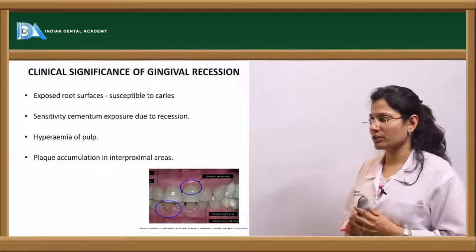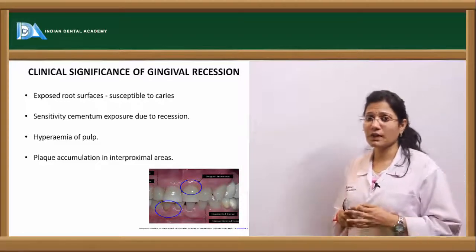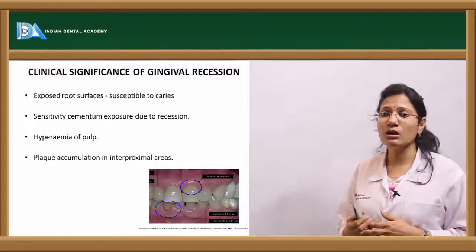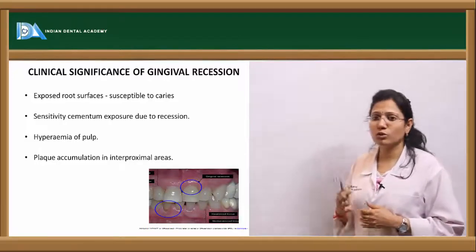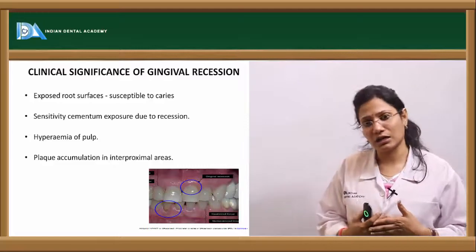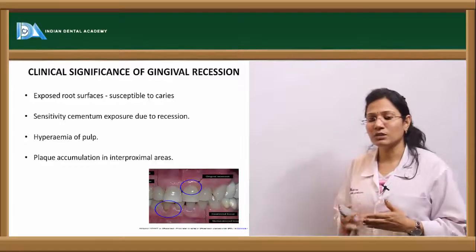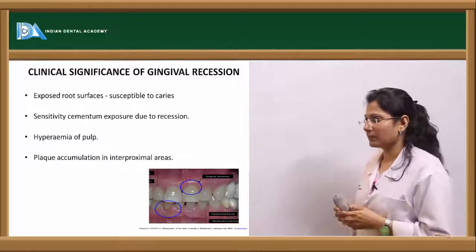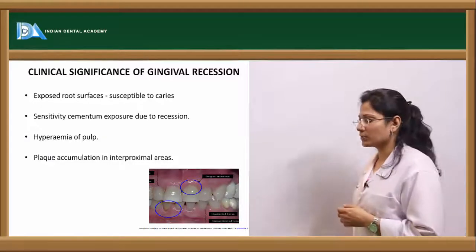The clinical significance of gingival recession: because of the exposure of root surfaces, the patient can complain of dentinal hypersensitivity and is more susceptible to root caries. When cementum is lost, it exposes the underlying dentine leading to dentinal hypersensitivity, which can spread through dentinal tubules or accessory canals and cause hyperemia of the pulp. There is also a high tendency of plaque accumulation in the interproximal areas.